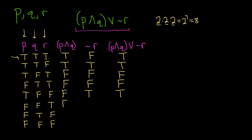For row 6 (F, F, T): P and Q is false because they're both false. The negation of R is false — it's the opposite truth value of R. The or statement is false because both are false. For row 7 (F, T, F): P and Q is false because P is false. The negation of R is true because R is false. The or statement is true because one of them is true. In the last case (F, F, F): P and Q is false, R is false so the negation is true, and the or statement is true because at least one is true.